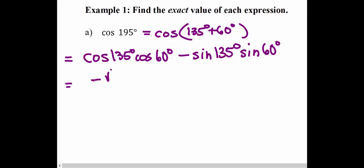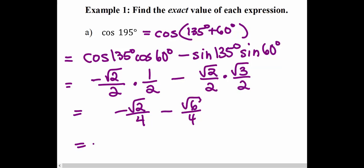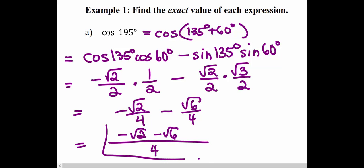Cosine of 135 is negative square root of 2 over 2, times cosine of 60 which is 1/2, minus sine of 135 which is square root of 2 over 2, times sine of 60 which is square root of 3 over 2. Multiply across the two fractions, then combine into the same denominator. So the cosine value of 195 degrees is negative square root of 2 minus square root of 6, all of that divided by 4.